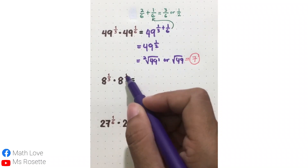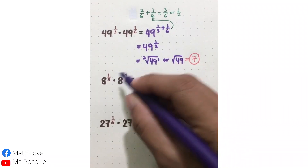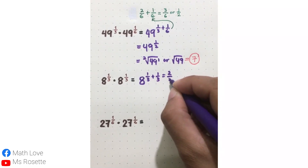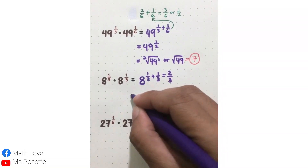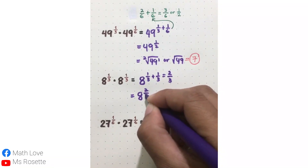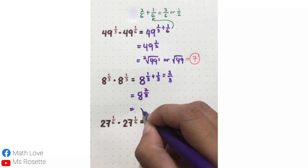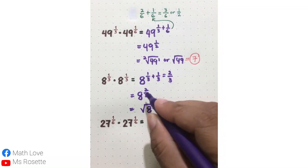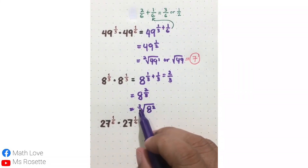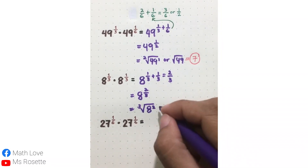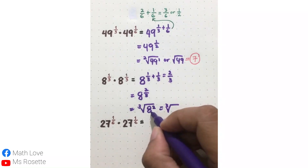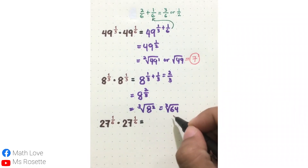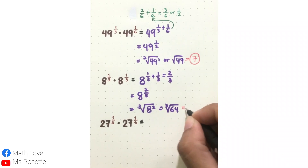Next example: 8 raised to 1 third times 8 raised to 1 third. Copy the base 8, then add the exponents: 1 third plus 1 third gives 2 thirds — 1 plus 1 is 2, copy the denominator 3. So it will be 8 raised to 2 thirds. Converting to radical expression: 8 goes inside, the exponent 2 becomes the exponent of the radicand, and the denominator 3 is the index — giving the cube root of 8 squared. 8 squared is 64, and since 64 is 4 times 4 times 4, the cube root of 64 is equal to 4.